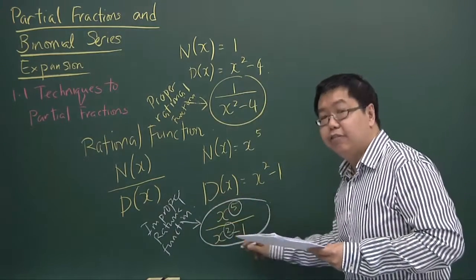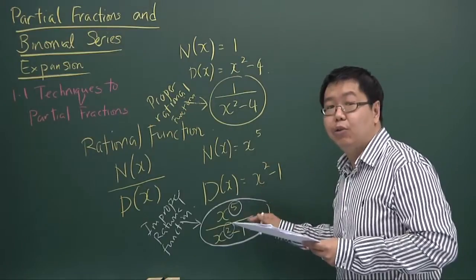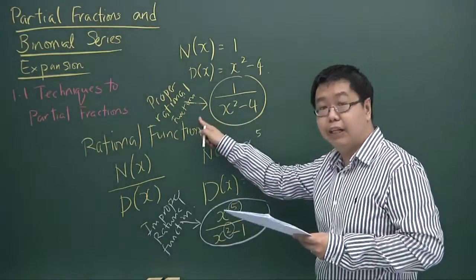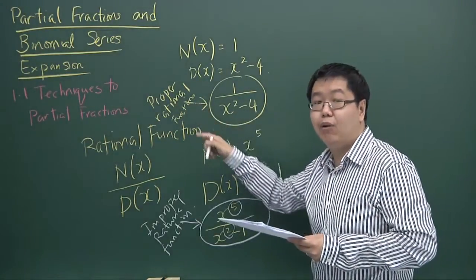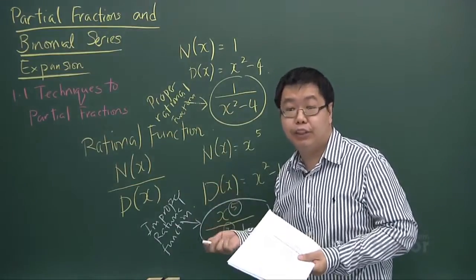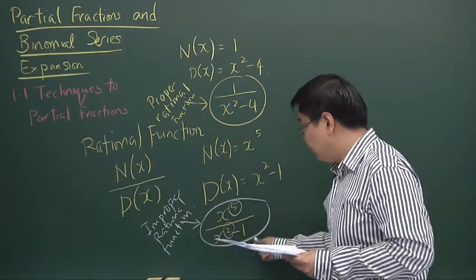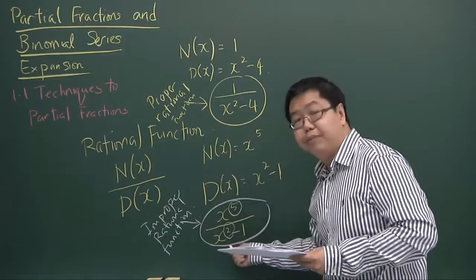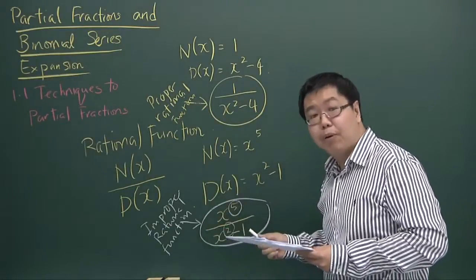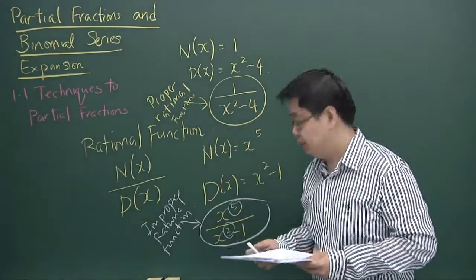For an improper rational function, we actually need to convert it to a proper rational function. We do that using long division, which all of you are very familiar with. Let's use this example to reduce this improper rational function into a proper rational function.